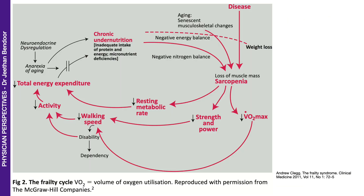The frailty syndrome or frailty cycle starts off with chronic undernutrition, where inadequate protein intake as well as energy intake, along with micronutrient deficiencies, ends up with sarcopenia or loss of muscle mass. That, combined with aging and weight loss, results in low muscle strength and power, low oxygen utilization, low resting metabolic rate, low walking speed, and low activity.